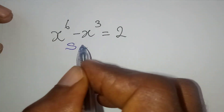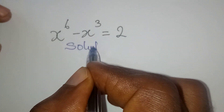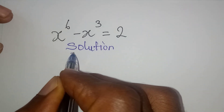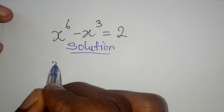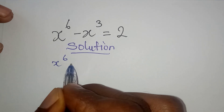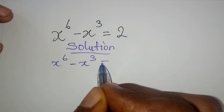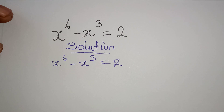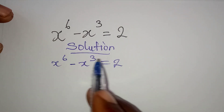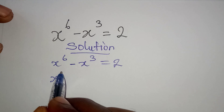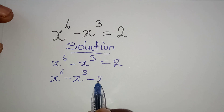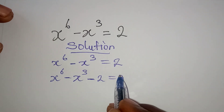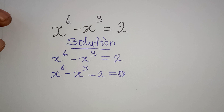Hello everyone, let's solve this problem quickly. Remember we are looking for the real values alone. We have x to the power of 6 minus x to the power of 3 equal to 2. The first thing I'm going to do is to bring 2 to the other side, so I have x to the power of 6 minus x to the power of 3 minus 2 equal to 0.